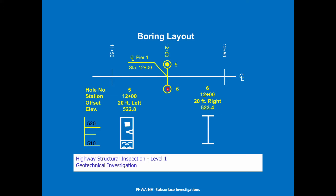Typically they'll do borings or auger refusals at every substructure unit. Here we did two at pier number one. An open circle is just a refusal. A shaded circle inside a larger circle is a core hole — here you can see this is core hole number five. Hole station number five gives you all the information: it's at station 12+00, taken 20 feet left of centerline, with a ground elevation of 522.88 when they drilled, and you can see what type of soil it was.